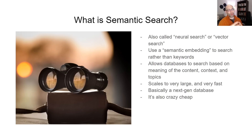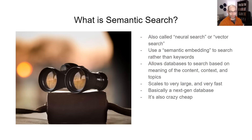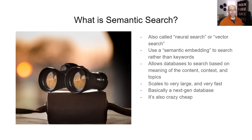What is semantic search? Semantic search is also called neural search or vector search — semantic search is just easier to say, but they're the same thing. The TLDR of how it works is you use a semantic embedding, which is just a string of numbers that represents the meaning of the text. It allows next-gen databases to scale very large, very fast, and also to search not just with keywords or indexes — it allows them to search based on the semantic meaning, the actual content, the context and the topics discussed in the actual records in your database. They can scale very large, they're very fast, and they're also very cheap, at least in comparison to fine-tuned models.